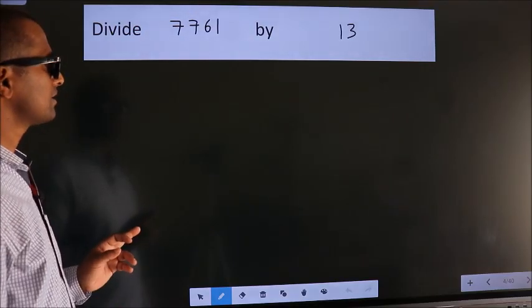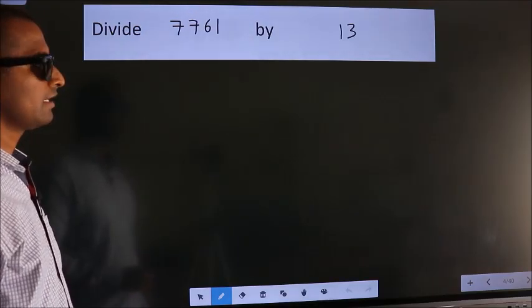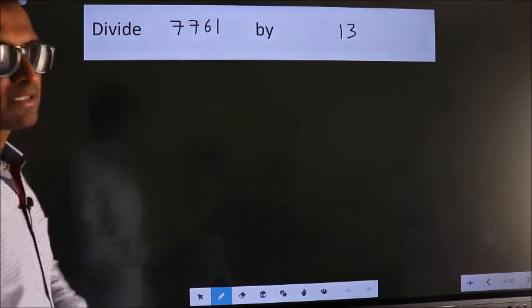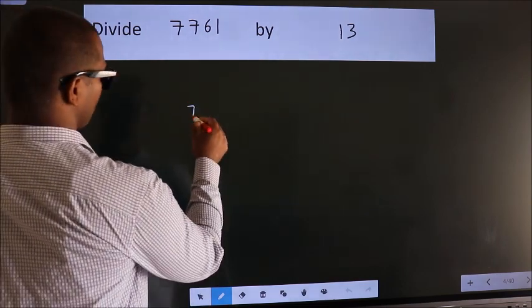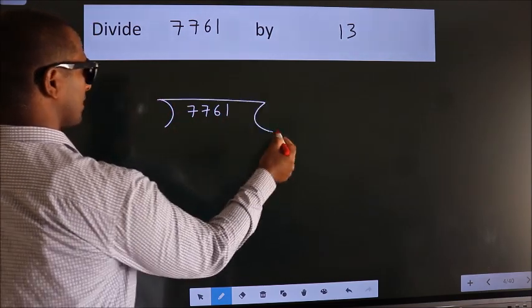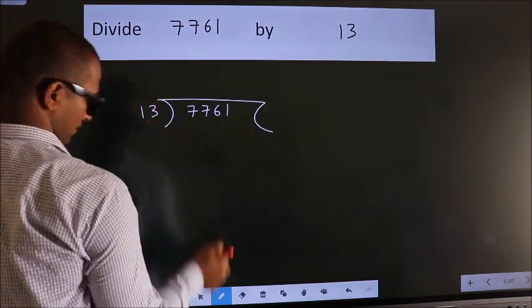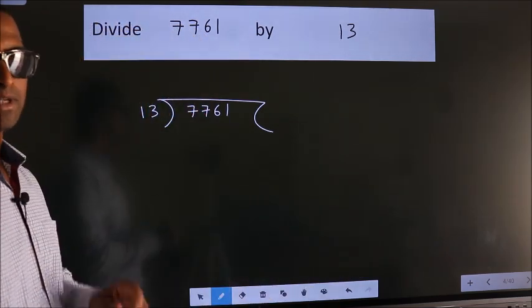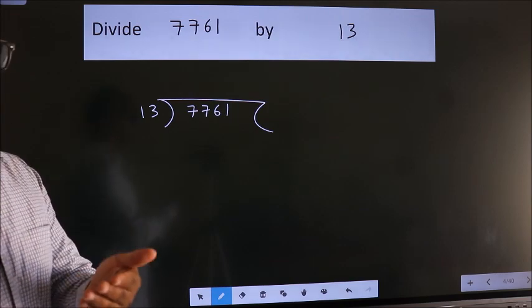Divide 7761 by 13. To do this division, we should frame it in this way. 7761 here, 13 here. This is your step 1. Now, next.